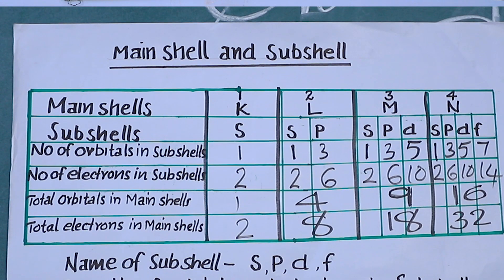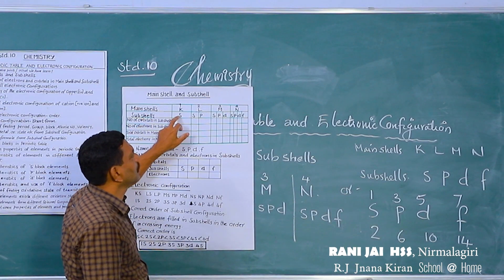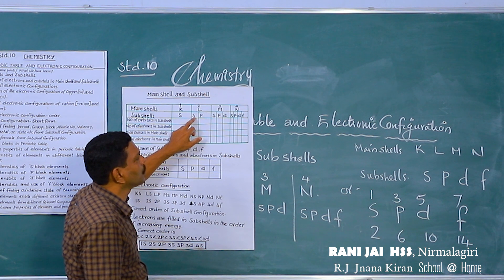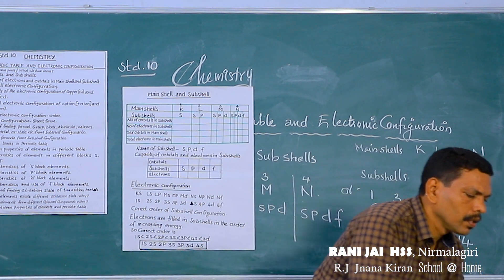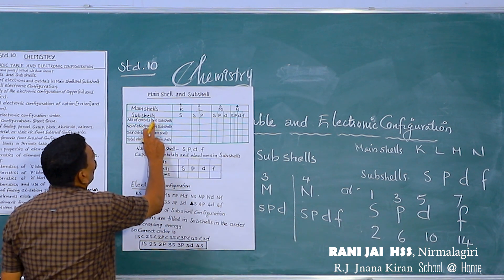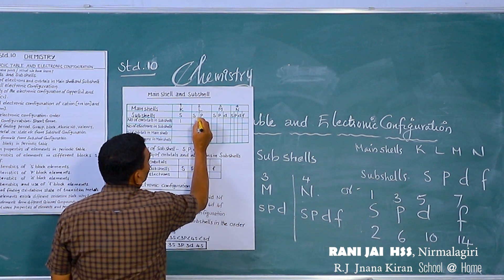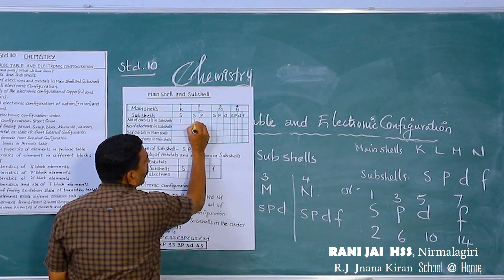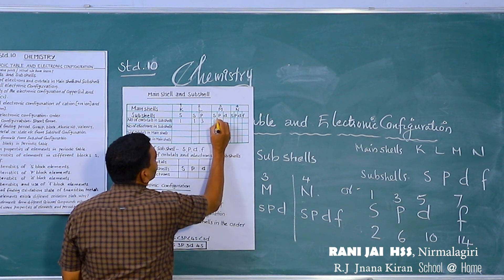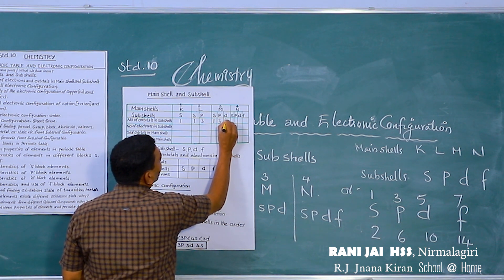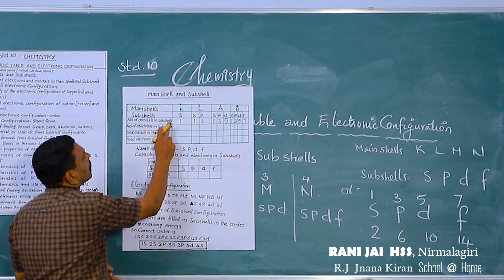Look at these charts. Main shells are K, L, M, N. Sub-shells: K has only one sub-shell S; L has two sub-shells S and P; M has S, P, D; and N has S, P, D, F. Now we can fill in the number of orbitals in each sub-shell. S has 1 orbital; then for L shell, S has 1 and P has 3 orbitals; then 1, 3, 5; and for N: 1, 3, 5, 7. These are the orbitals present in each sub-shell.